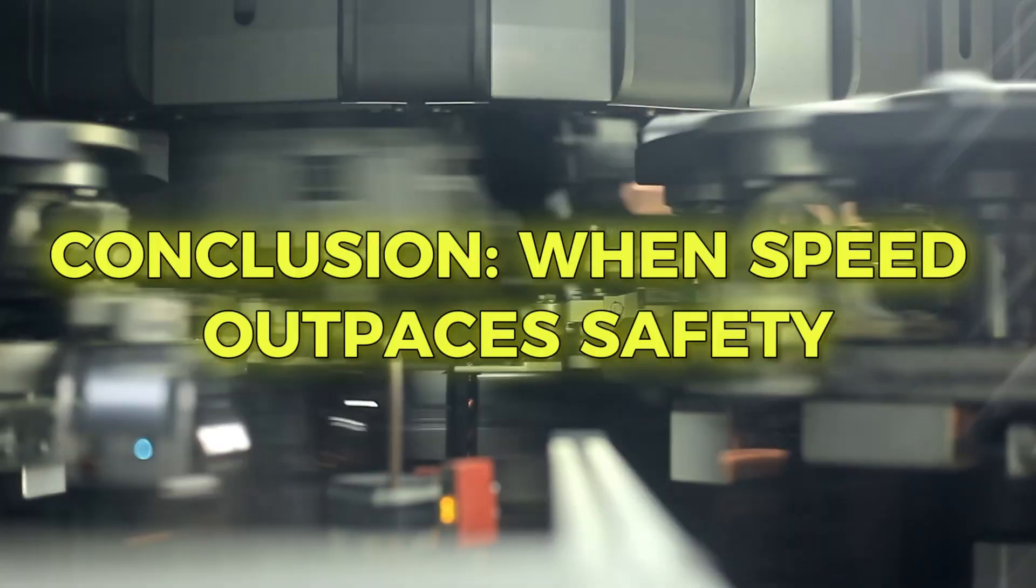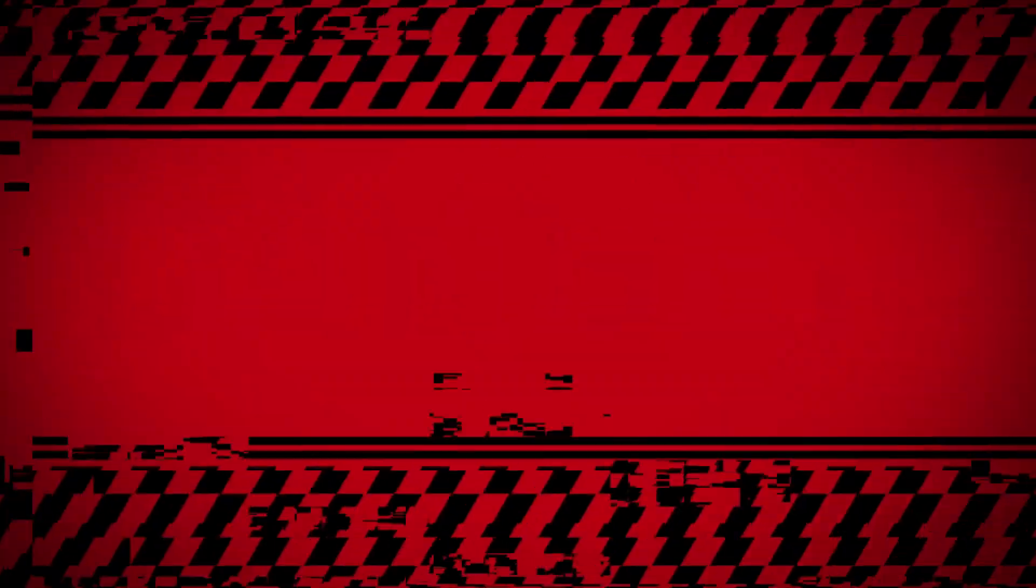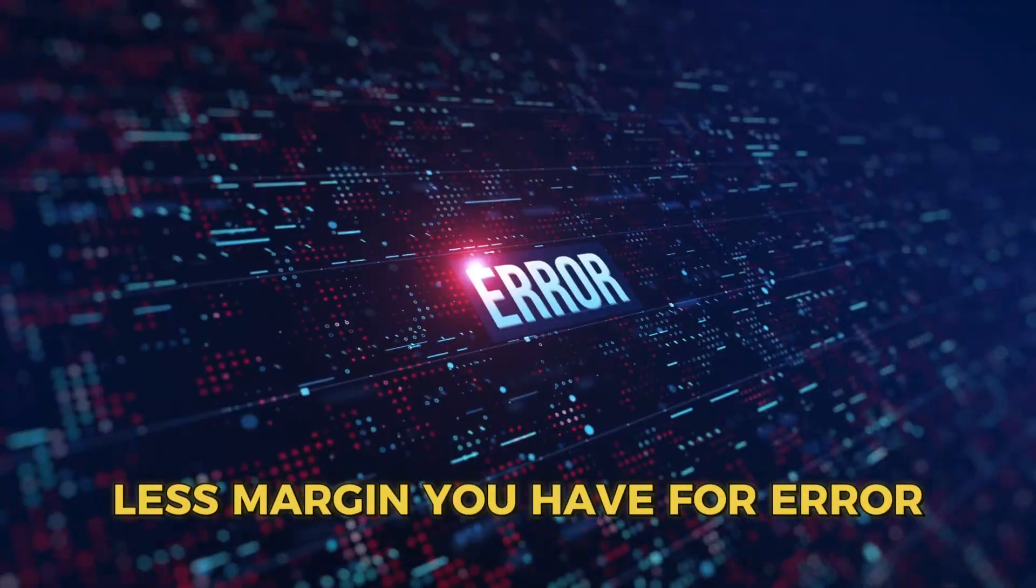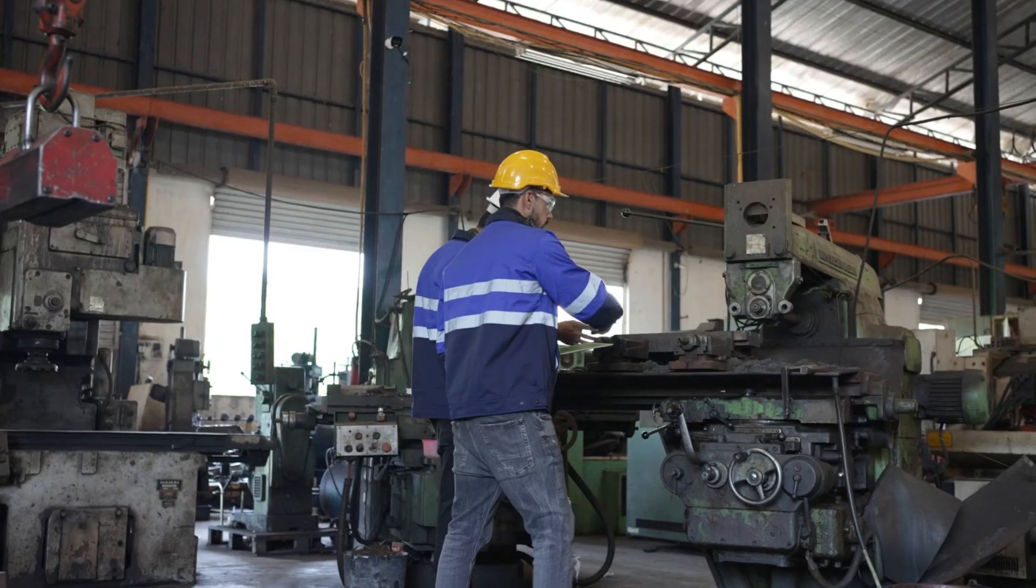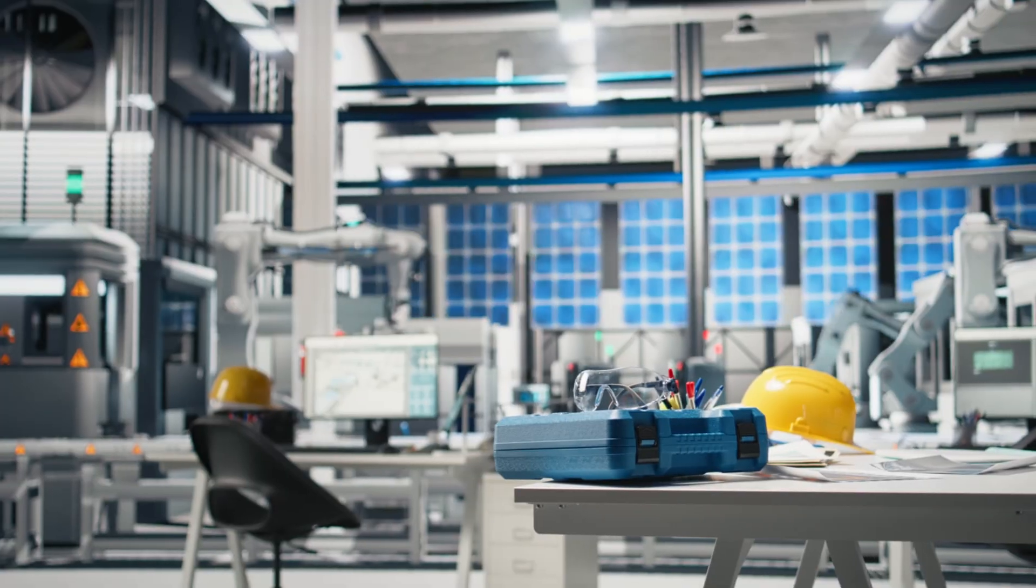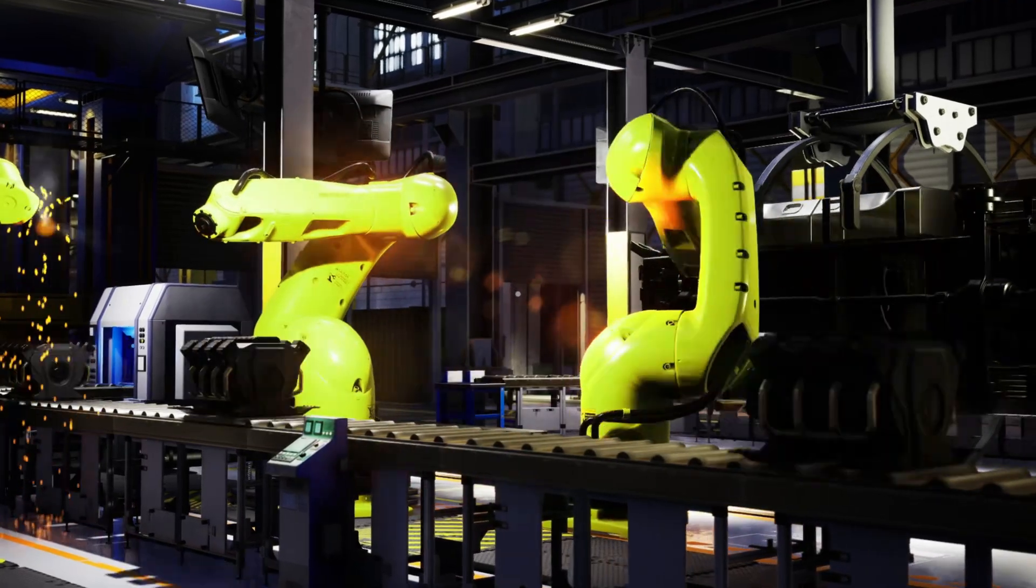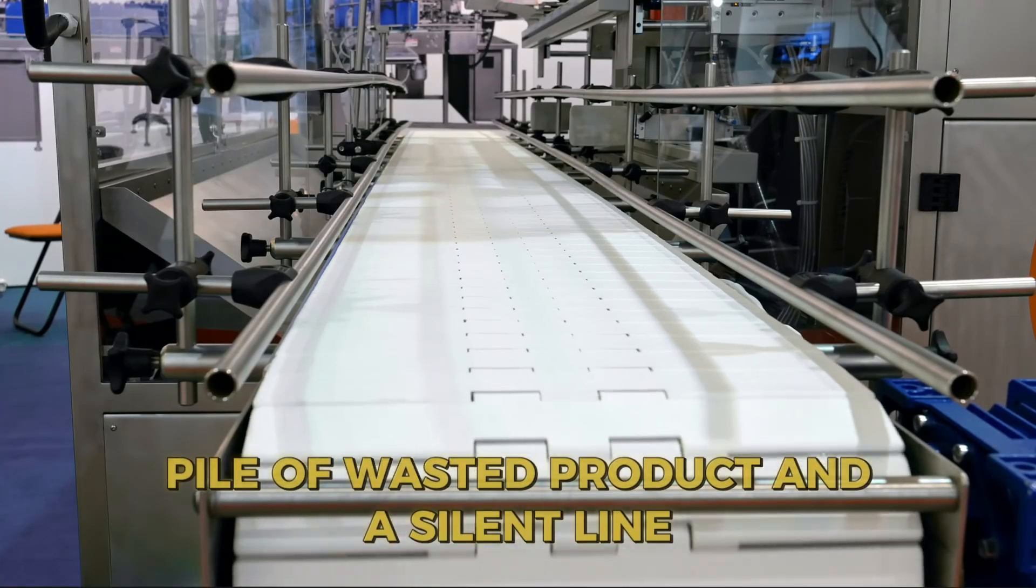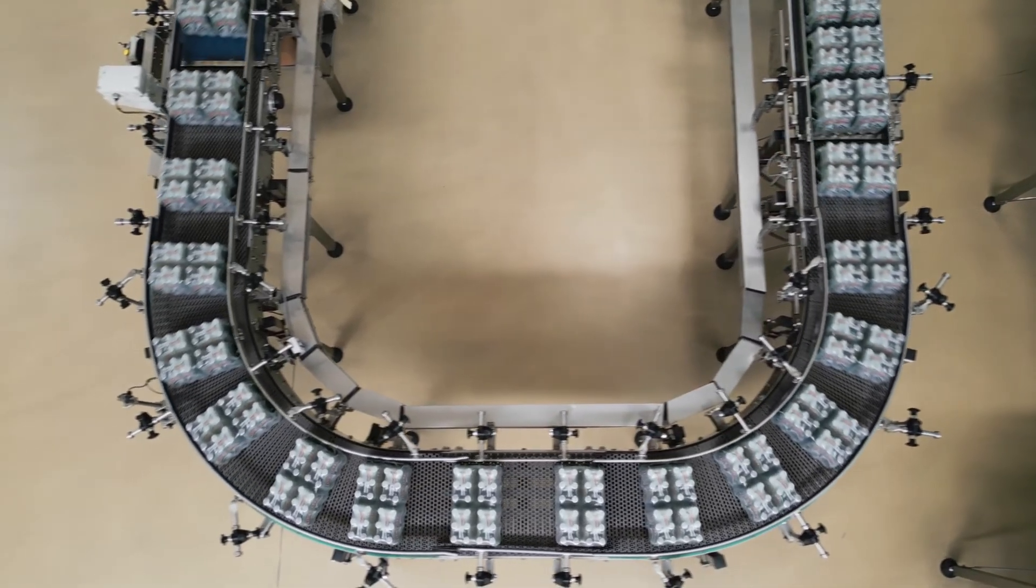Conclusion, when speed outpaces safety. High-speed manufacturing is engineered efficiency, but it comes with a dangerous reality. The faster you push a system, the less margin you have for error. In this case, a cheap sensor couldn't keep up, timing collapsed, and a perfectly functioning line turned into a high-speed disaster. A fraction of a second, a small delay, a tiny shortcut, and suddenly the entire production floor is staring at a pile of wasted product and a silent line. Next time someone says, let's push the line faster, remember this story. Speed is powerful, but only when everything else is built to handle it.